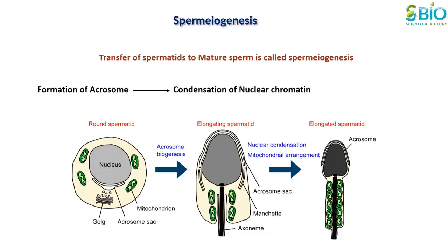Condensation of nuclear chromatin in the head to form a dark staining structure. Growth of the tail opposite the acrosome and loss of excess cytoplasmic material which is shed as a residual body. The residual body is phagocytosed by the Sertoli cells.